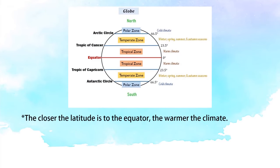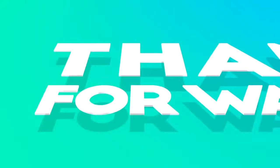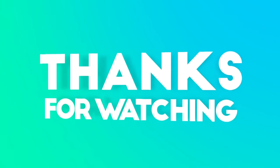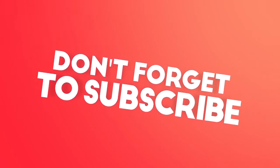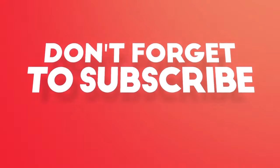We can infer that the closer the latitude is to the equator, the warmer the climate, while the closer it is to the pole, the colder. Thus, there is a relationship between the latitude of a place and its climate.